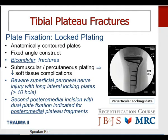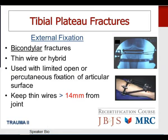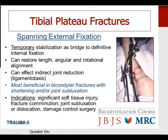External fixation is appropriate for bicondylar fractures using thin wires exclusively or a hybrid technique with thin wires at the joint and half-pins in the tibial shaft, typically with limited open or percutaneous fixation of the articular surface. Thin wires at the knee joint need to be kept at least 14 millimeters from the joint surface due to the capsular reflection. Spanning external fixation is useful as a bridge to definitive internal fixation for complex fractures, restoring length, angular, and rotational alignment, and indirectly reducing the joint through ligamentotaxis. Ideal indication is bicondylar fractures with significant shortening or joint subluxation.